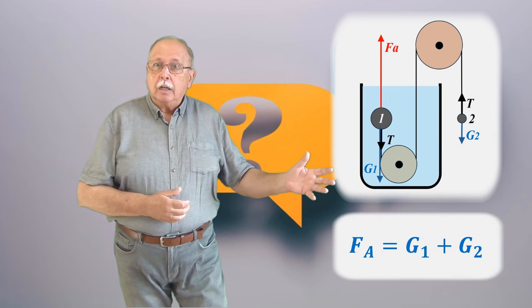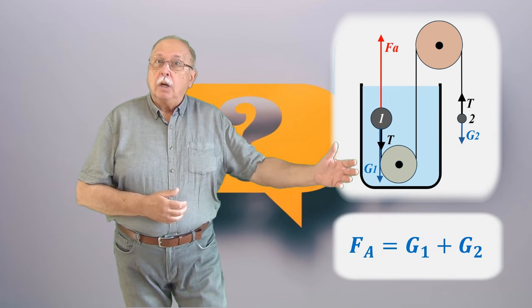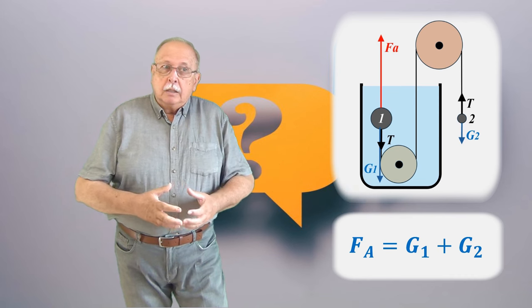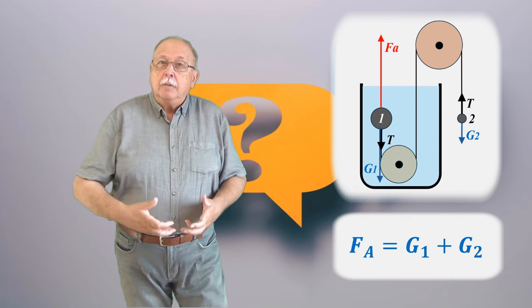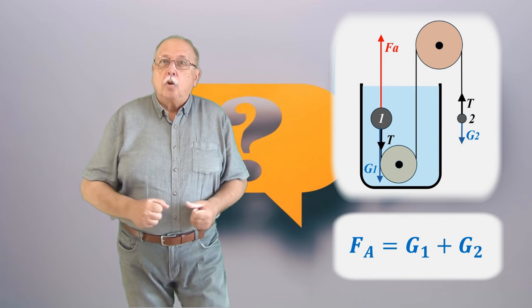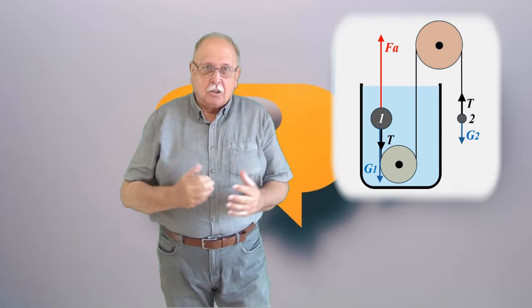Așa că avem ecuația: forța arhimedică este egală cu suma celor două greutăți, care ne arată că forța arhimedică ține cele două bile. Forța arhimedică le ține, nu le lasă să coboare.